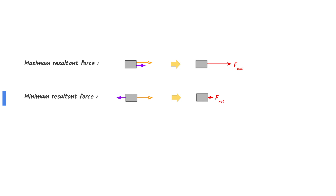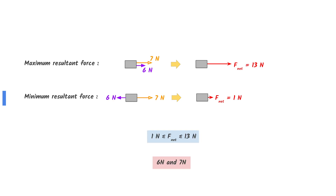Maximum resultant force can be found when both forces point in the same direction. Minimum resultant force can be found when the forces point in opposite directions.